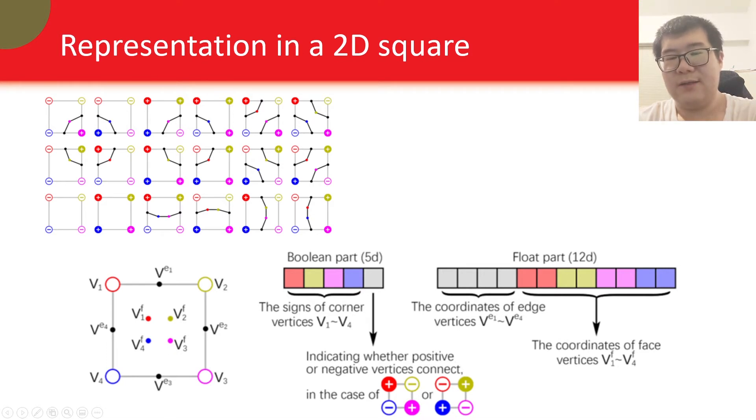On the right, you can see how this square can be stored into a vector with a fixed length, despite the topological cases. We divide this vector into two parts, a boolean part that stores binary values, and a float part to store floating point numbers. The purpose of the boolean part is to store the topological case of this square. Since most of the cases are unambiguous, they can be identified by the four signs on the corners.